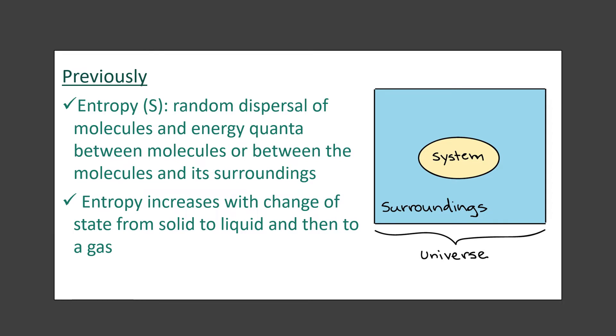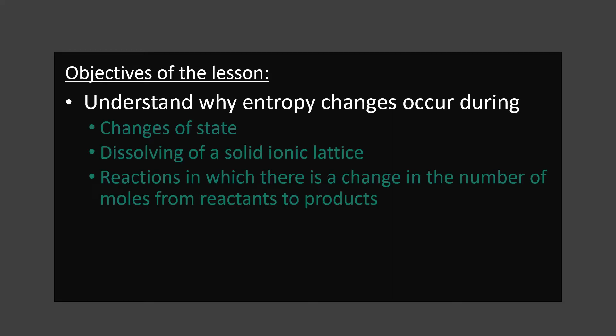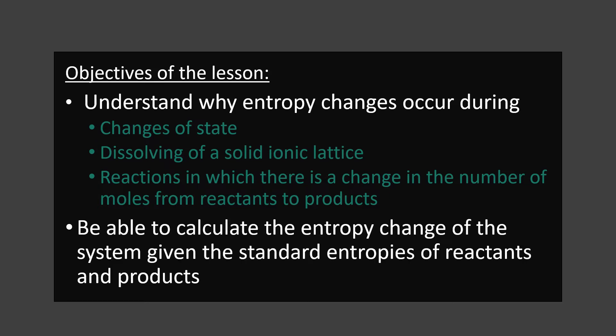This we will further explore in today's lesson as well. So let's first have a look at the objectives for today's lesson. It is to understand why entropy changes occur during change of state, or dissolving of a solid ionic lattice, or when there is a change in the number of moles from reactants to products in reactions. We will also see how to calculate the entropy change of the system given the standard entropy values of reactants and products.